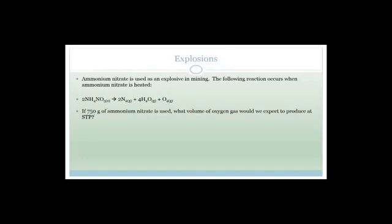It says if 750 grams of ammonium nitrate is used, what volume of oxygen gas would we expect to produce at STP? So here's the hint, the volume of one mole of any gas at STP equals 22.4 decimeters cubed. So if I work out from this the number of moles of oxygen I'm getting, then obviously I can then work out the volume, because that's what they want. They want the volume. So let's do that now.